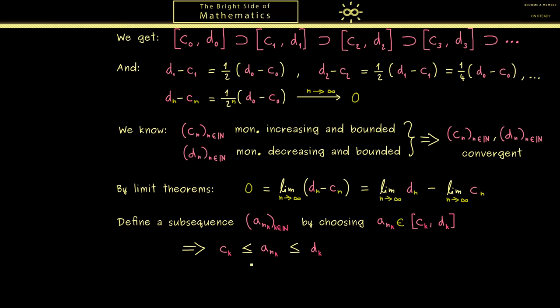Or to put it in other words here, we can now use the sandwich theorem. It simply tells us that the sequence in the middle is also convergent with the same limit. And exactly this limit is our wanted accumulation value. Now this means that our proof is finished here.